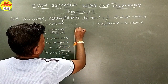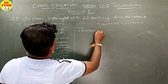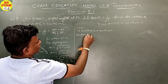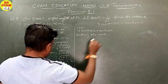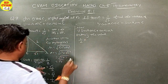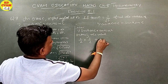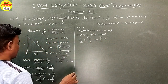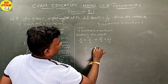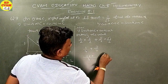Now, part 1: sin A cos C plus cos A sin C. Putting values: sin A is 1 upon 2, cos C is 1 upon 2, cos A is root 3 upon 2, sin C is root 3 upon 2. This gives 1 upon 4 plus 3 upon 4, which equals 4 upon 4, which equals 1.